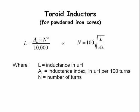Where L is inductance in microhenries, A sub L is the inductance index in microhenries per 100 turns, and N equals the number of turns.